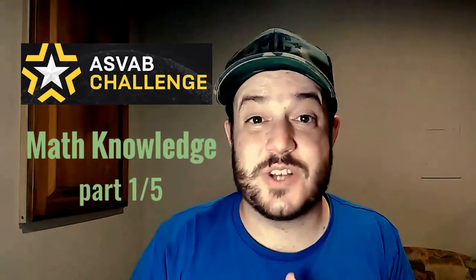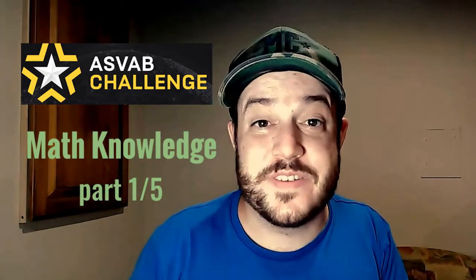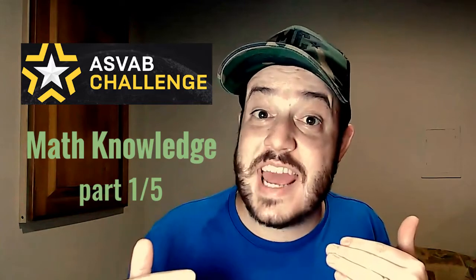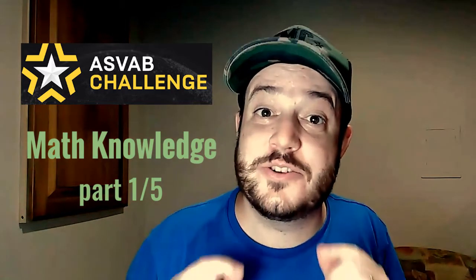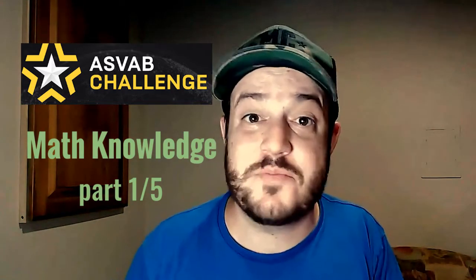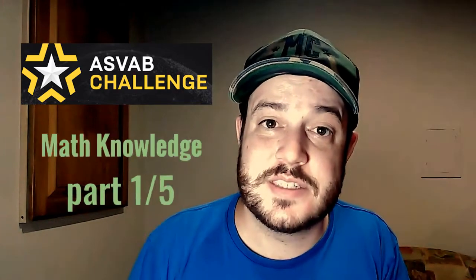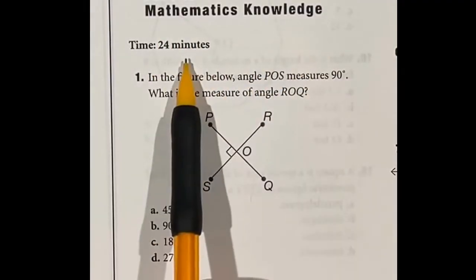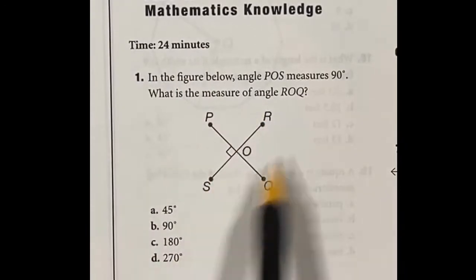All right, we're getting ready to cover five questions off the Mathematical Knowledge portion of the ASVAB. This is part of the AFQT, so make sure you know how to do these if you want a chance of getting in the correct branch for your military preference. Mathematical Knowledge - you get 24 minutes here, so that means we need to average about a little under a minute for each question.